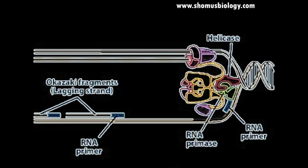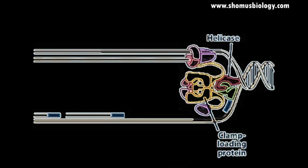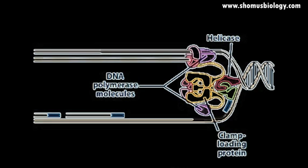Forming short segments called Okazaki fragments that collectively form the lagging strand. A structure called the clamp loading protein associates with a DNA polymerase molecule on both parental strands of the DNA. The clamp loading protein is also bound to helicase.